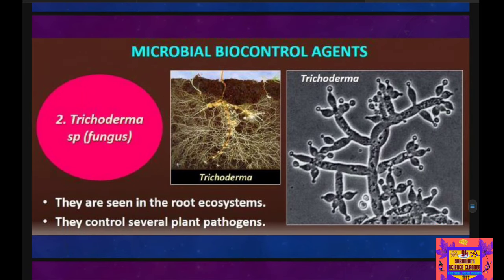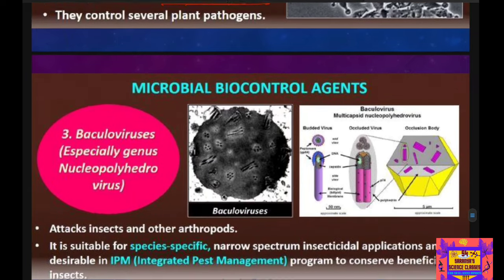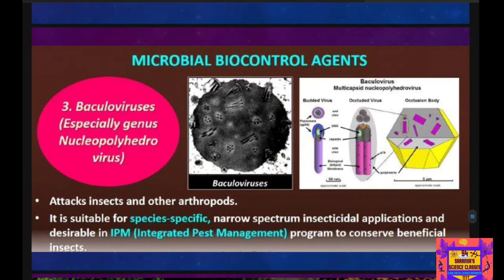Another important microbial biocontrol agent is Trichoderma — a fungi species. Trichoderma protects the root system and controls plant pathogens. It is found in the root ecosystem and is used to protect the plant's root system and kill invading pathogens.